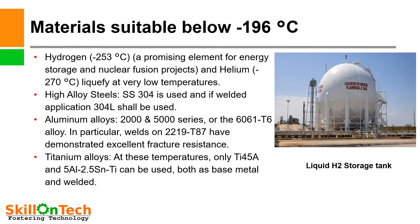For these temperatures, high alloy steels such as SS304 are used; if welded applications are required, then 304 low-carbon stainless steel shall be used. Aluminium alloys of the 2500 series or the 6061-T6 alloy can be used in particular. Weld-on 2219-T87 has demonstrated excellent fracture resistance. For titanium alloys at these temperatures, only titanium 45A and 5Al-2.5Sn titanium can be used both as base metal and for welded applications. A picture of a liquid hydrogen storage tank is shown, and for these types of storage tanks and vessels, the materials discussed are suitable.